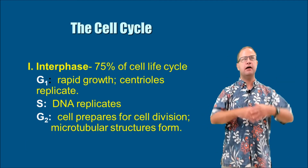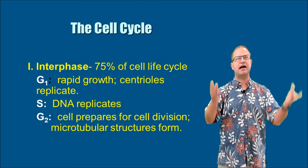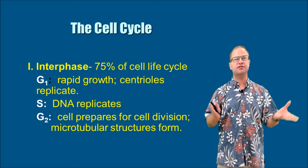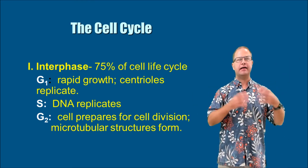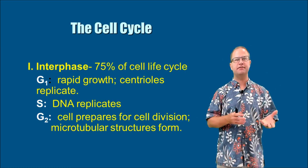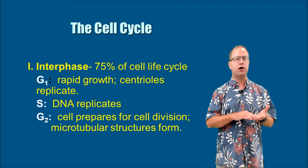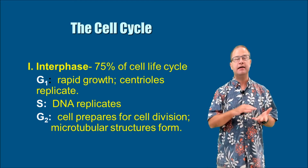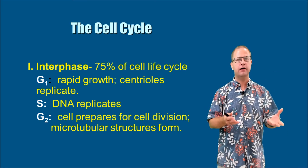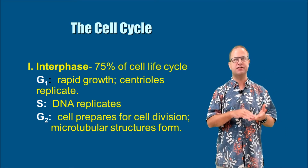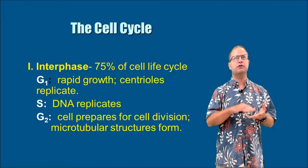So the cell cycle: mitosis is the area where the cell is actively dividing, but everything else is called interphase. Interphase is the majority of what's going on in the cell — it accounts for 75% of the cell's life cycle, and it's divided into three parts: G1, S, and G2. The G stands for growth, whereas S stands for synthesis. This is when we are synthesizing DNA to have two copies, so that when the cells divide, each cell will have equal copies of that DNA.